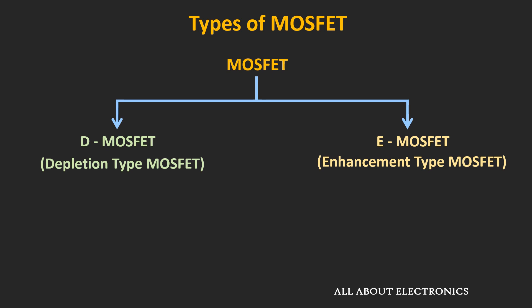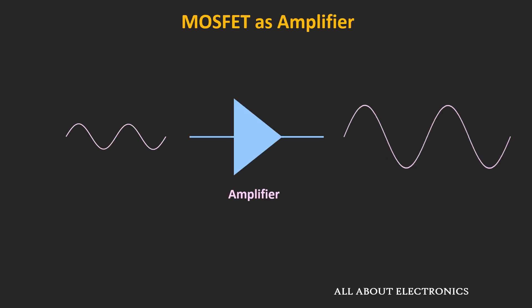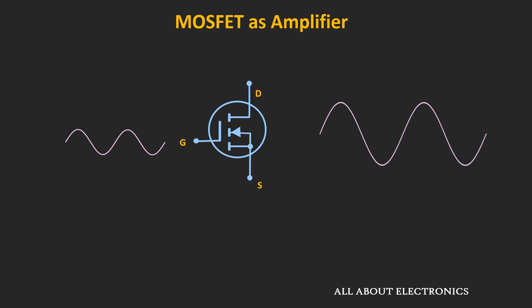Before we jump into it, let us quickly understand why we need to bias the MOSFET. Although for the BJT and JFET I have already explained it in detail, for those who have not watched those videos, let me quickly explain the need of the biasing. We want to use the MOSFET as an amplifier — whenever we apply a small input to the MOSFET, we should get the amplified signal at the output. But if we just apply a small input signal between the gate and the source, we directly cannot get the amplified output, and that is because of the MOSFET characteristic.